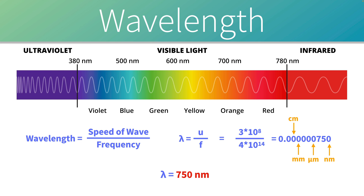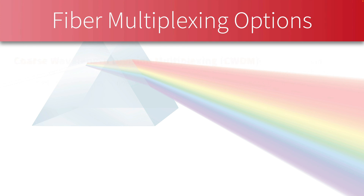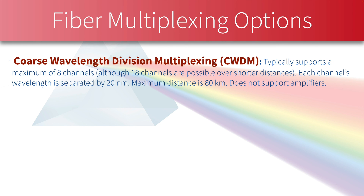Separating communication channels into different wavelengths is called multiplexing. The first option is Coarse Wavelength Division Multiplexing, or CWDM. It typically supports a maximum of 8 channels, though over short distances up to 18 channels are technically possible. With CWDM, every lambda is separated by 20 nanometers so they don't overlap. This approach can reach approximately 80 kilometers, but it does not support amplifiers along the way.